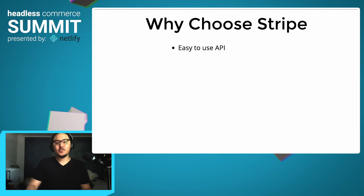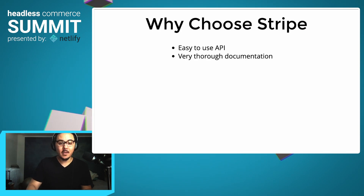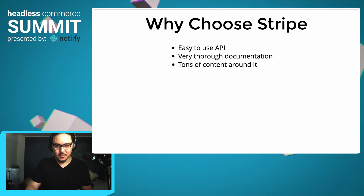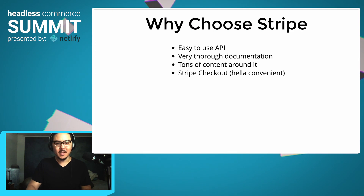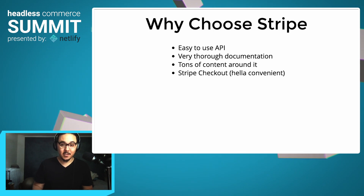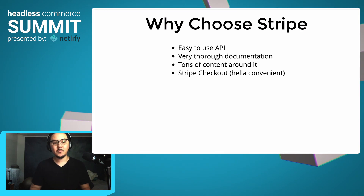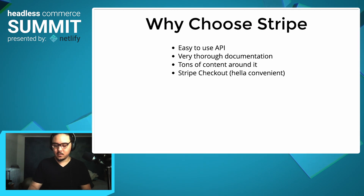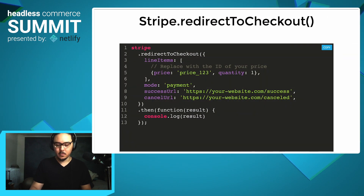So why choose Stripe? Stripe has a very easy-to-use API, their documentation is thorough, and there's tons of content around it. If you're not going to Stripe's website directly, there's a million developers who have made all kinds of content around doing these things. What's really good here is Stripe's checkout — it is hella convenient. It takes your shoppers to the checkout experience on their own hosted solution, which is not normally something you want to host yourself. There's a lot of work to do there, and there are tons of security concerns.